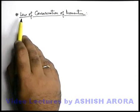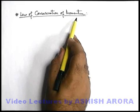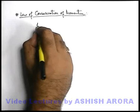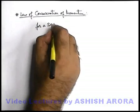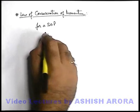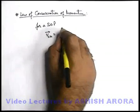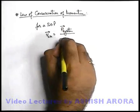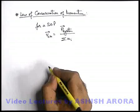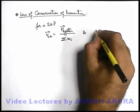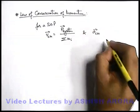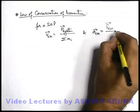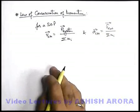Dear students, let's study the law of conservation of momentum. As we already studied in the previous chapter about the system of particles, for a system of particles the velocity of the centre of mass can be given by the total momentum of the system divided by the sum of all particle masses. Similarly, the acceleration of the centre of mass can be given as the net external force acting on the system divided by the sum of all masses of the system.